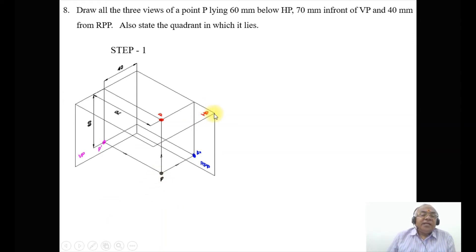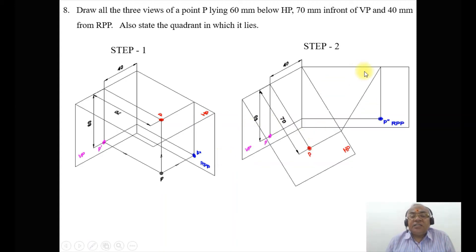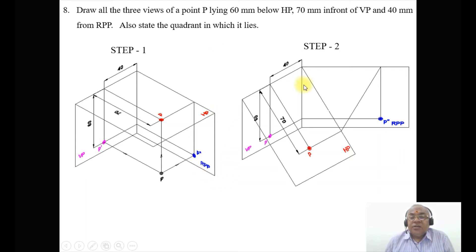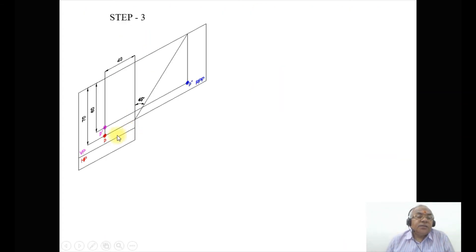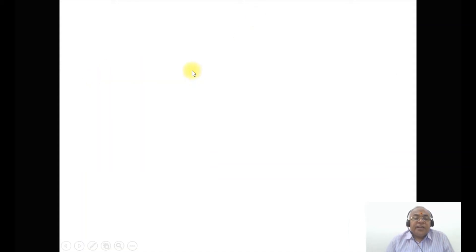When you cut and open the planes, the horizontal plane is rotated downwards in the clockwise direction, and the RPP is rotated counterclockwise so that it aligns with the vertical plane. Both VP and HP will be below the XY line, and the right profile plane will be towards the right side. The corresponding images can be seen here.